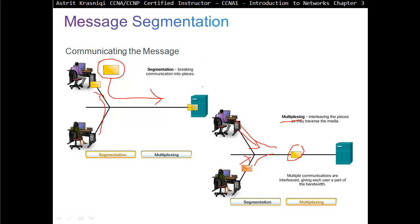So segmentation is breaking into small pieces and each piece is going to get a sequence number. So at the destination, we'll be able to reassemble the messages just the way they were sent. So segmentation helps with sending big messages by breaking into small pieces and that helps with multiplexing as well.